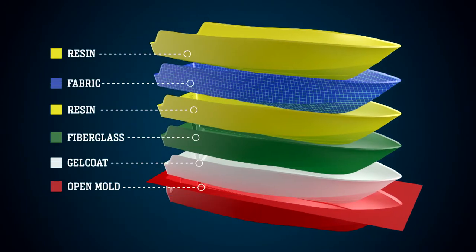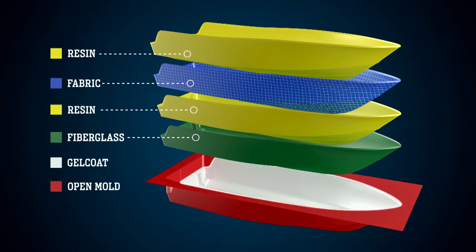A precisely formed mold is prepped and polished and then gel coat is added at a precisely regulated thickness.